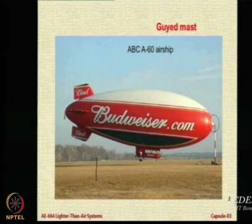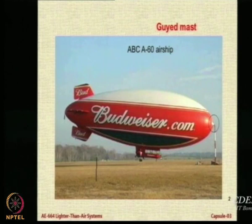You also have something called a guide mast, which is a central member that has ropes that can be attached to the ground, just like a tent pole — you have a main pole and then ropes attached to the ground. A guide mast is normally used for medium-sized airships.